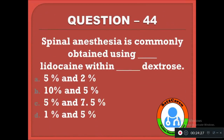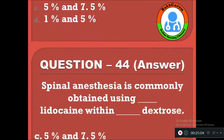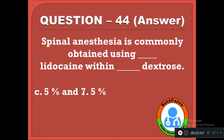Question 44: Spinal anesthesia is commonly obtained using what percentage of lidocaine within what percentage of dextrose? Option A: 5% lidocaine and 2% dextrose, B: 10% lidocaine and 5% dextrose, C: 5% lidocaine and 7.5% dextrose, D: 1% lidocaine and 5% dextrose. The correct answer is C, 5% lidocaine within 7.5% dextrose.